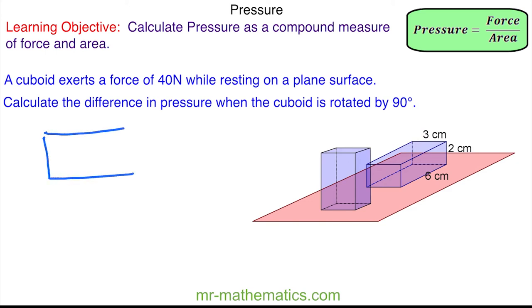So when the cuboid lays flat, we have a rectangle where this length is 6 cm, which is here, and this length is 3 cm. So the area of the rectangle is 18 cm².